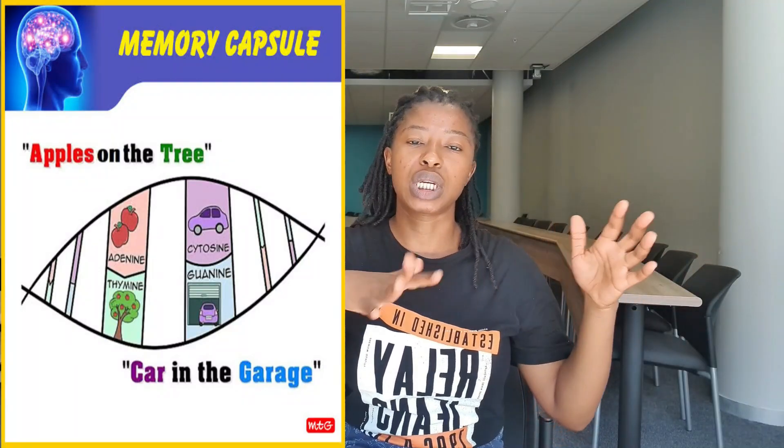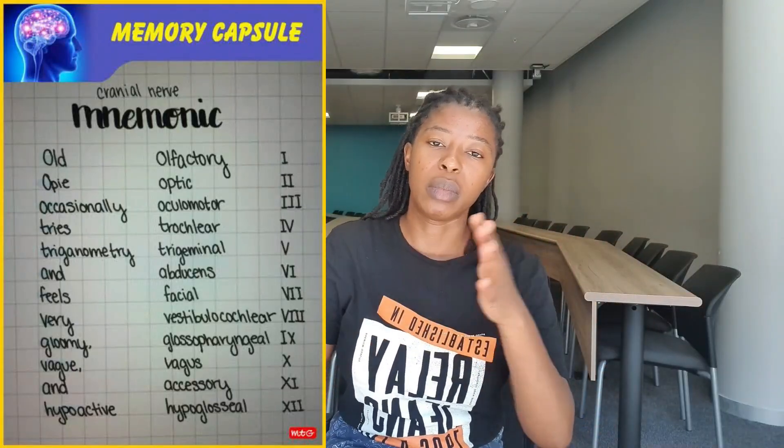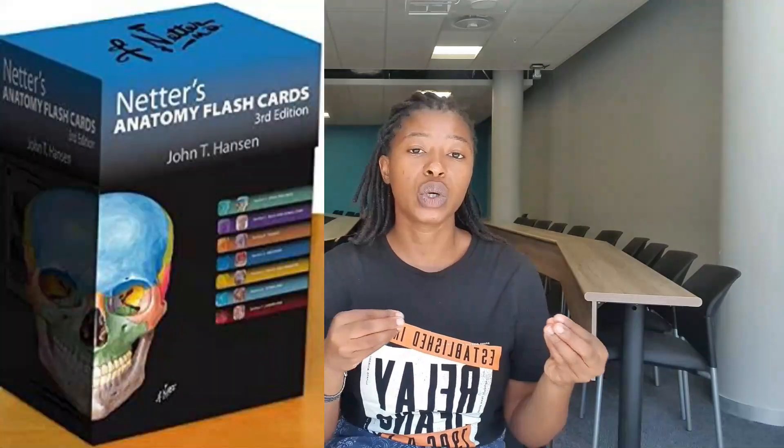Another great note-taking method is mnemonics. You can take the first letter of each word in a list and create a new word, or make a little sentence using those letters to remember the list. Another system is cue cards, which are great for list-based topics that require more detail. I used cue cards for muscles, because you need to know each muscle's location and movements — flexion, extension, adduction, abduction, and so on. Making them yourself causes your brain to retrieve information. There are also pre-made options like the Netter's cue card guide, which covers the whole human body.